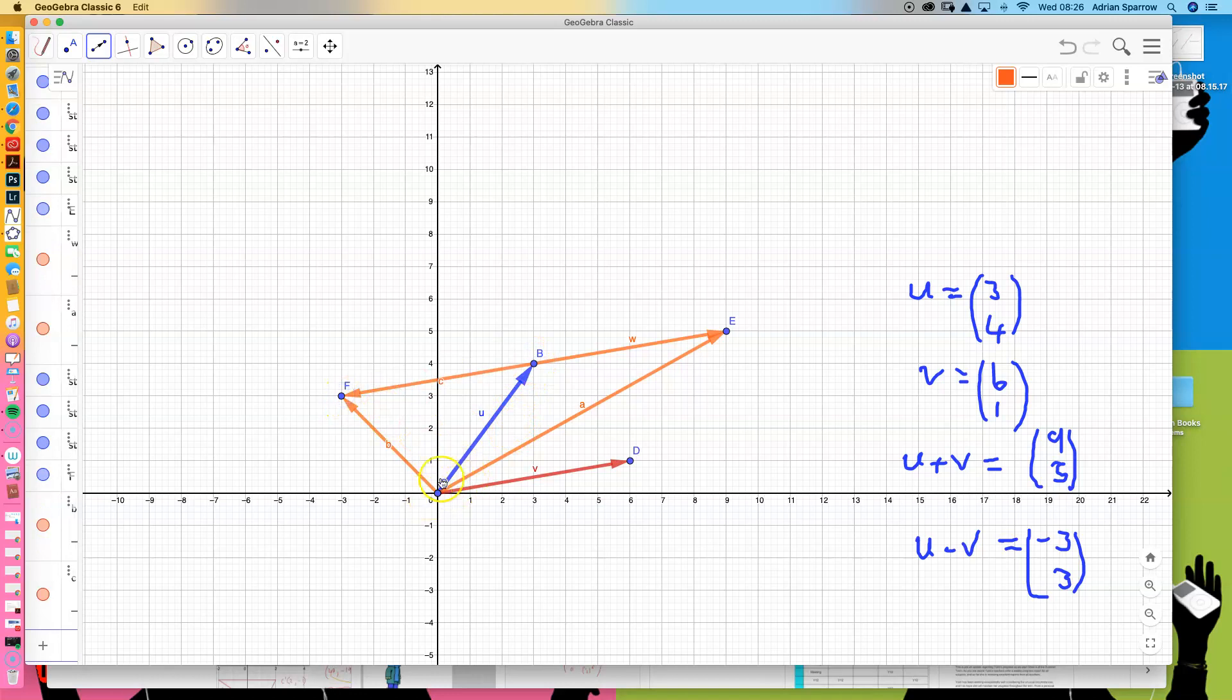If I was to draw that vector on there. So these are three very simple operations you can do with vectors: you can multiply by a scalar, you can add, and you can subtract.